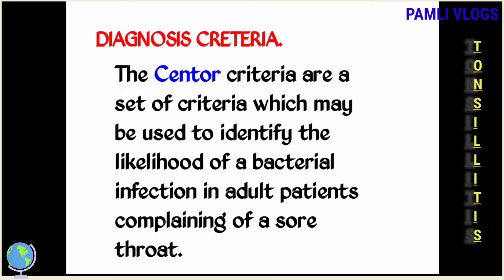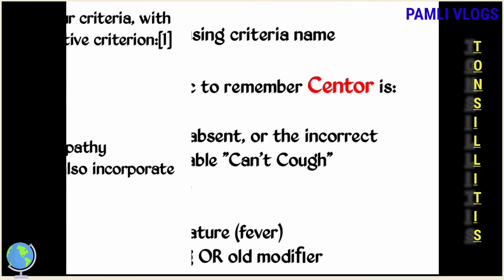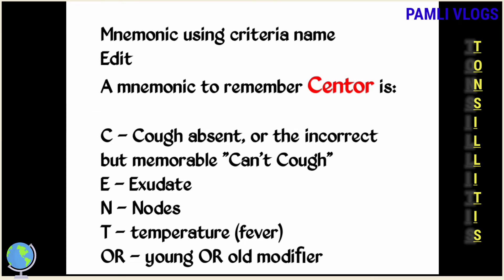For diagnosis, we use the Centor criteria, a common tool used to identify the likelihood of bacterial infection in adult patients complaining of sore throat. Patients are judged on four criteria: absence of cough, tonsillar exudate, history of fever, and tender anterior cervical adenopathy. The modified Centor criteria also incorporate patient age — add one point if age is under 15, subtract one point if over 44. The acronym is CENT: Cough absent, Exudate, Notes (nodes), Temperature, plus age adjustment.